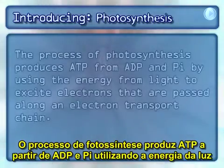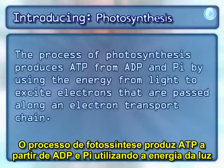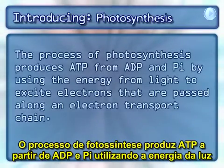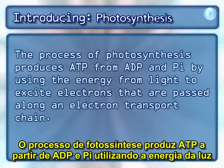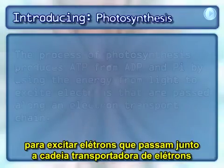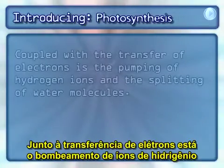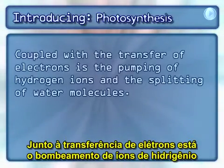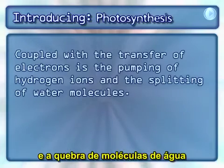The process of photosynthesis produces ATP from ADP and PI by using the energy from light to excite electrons that are passed along an electron transport chain. Coupled with the transfer of electrons is the pumping of hydrogen ions and the splitting of water molecules.